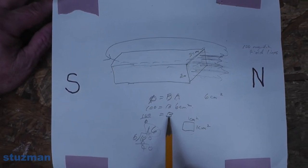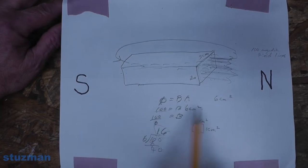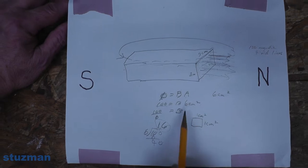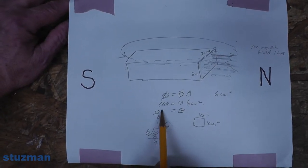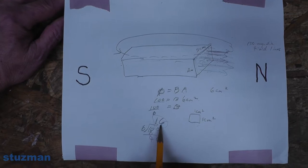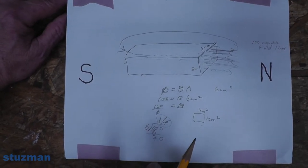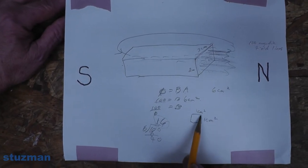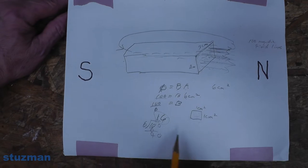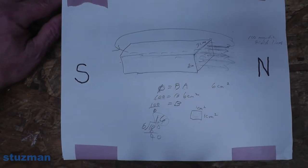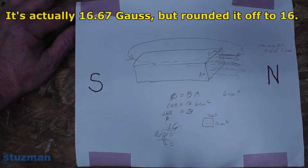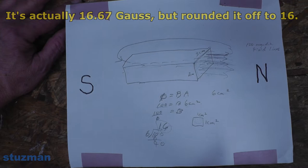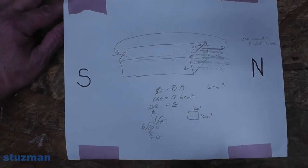Our area is 6 square centimeters, and we know we have 100 field lines coming out. To solve for B, magnetic flux density: 100 divided by 6 equals approximately 16. In a unit area of 1 square centimeter, how many flux lines pass through? In this case 16 — that would be 16 Gauss. That gives you a brief explanation of what a Gauss reading means.